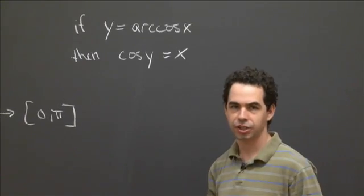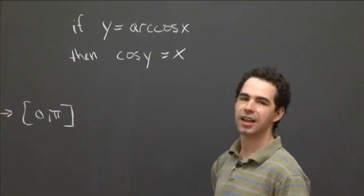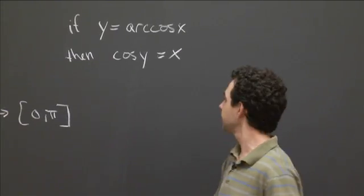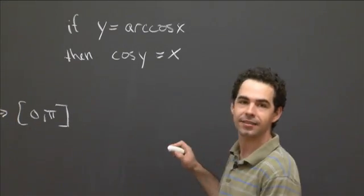So we get cosine of y is equal to x. And now we can differentiate. So what we're after is the derivative of arc cosine of x, so we're after dy dx. So we differentiate this through with respect to x. So on the right-hand side, we just get 1.